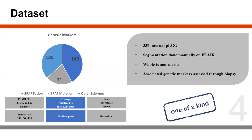To conduct AI-based analysis, the dataset needs to be AI-ready, and for that, heavy preprocessing is required. We had four different sequences for each patient: FLAIR, T1, T1 Contrast Enhanced, and T2. All images were registered to the SRI-24 Atlas, so after preprocessing we had the same coordinate system for the images, with similar size 240×240×155. All images were skull-stripped and normalized.